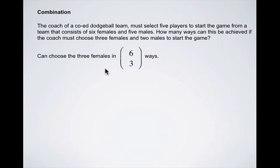If we consider just the females, and we're going to choose out of the six, three females. In this case, dodgeball has no positions, so it doesn't matter, the order does not matter in this case. So it's going to be the combination of six choose three will be the number of ways that we can choose the three females out of the six.